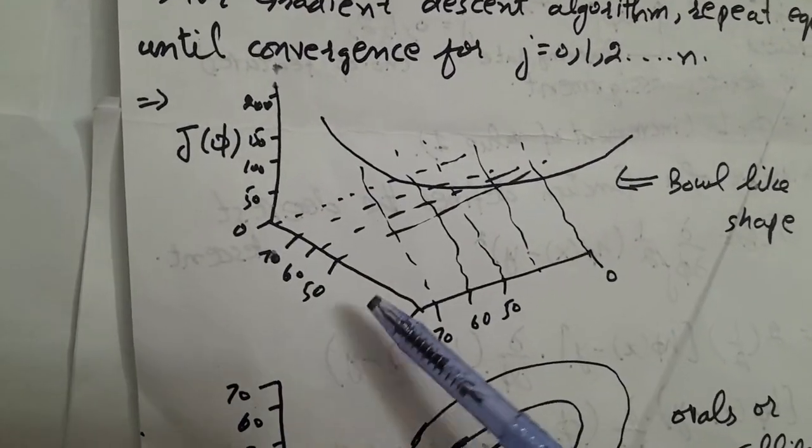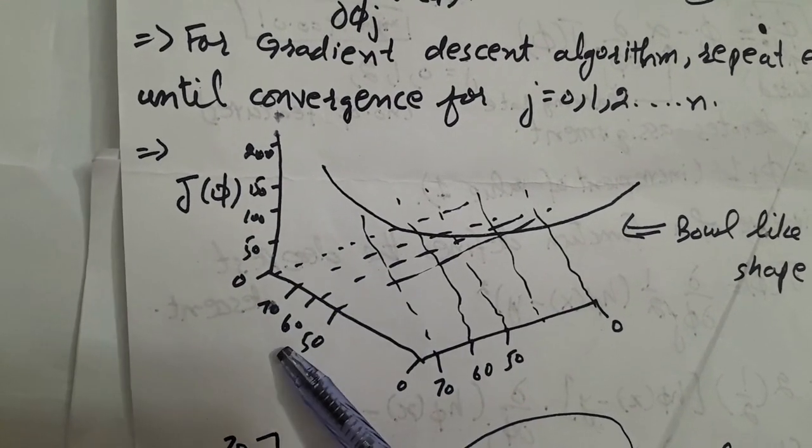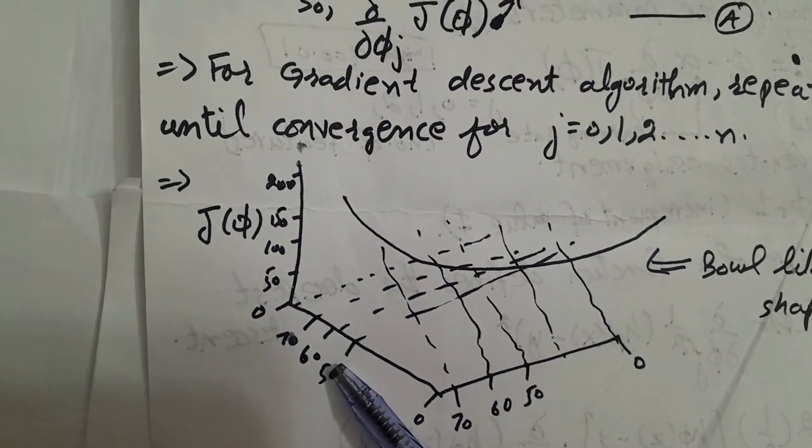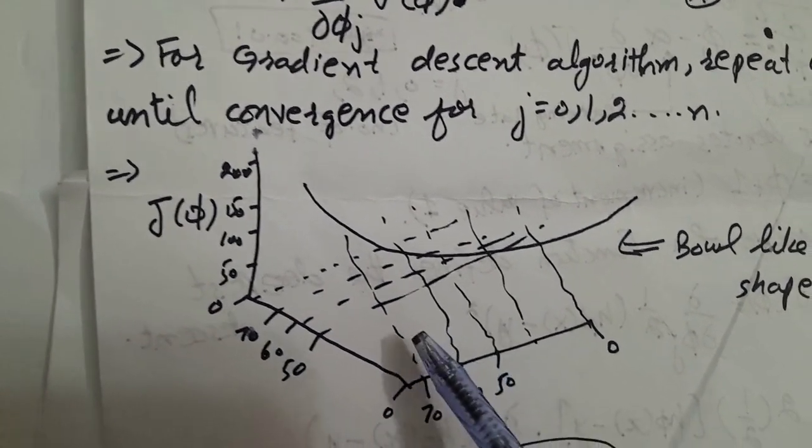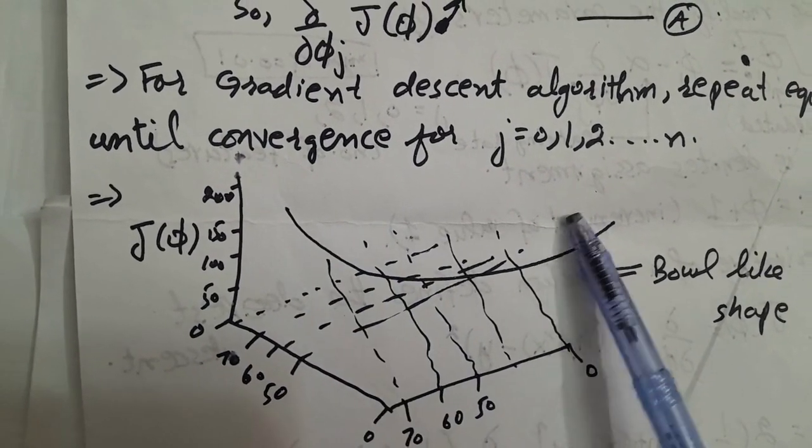Now we draw J of phi with phi 1, phi naught, and phi 1. We will get a bowl-like shape.